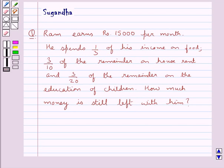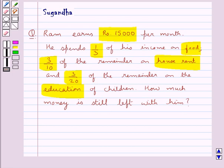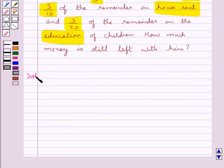Hello and welcome to the session. In this session we discuss the following question: Ram earns Rs 15,000 per month. He spends 1 upon 3 of his income on food, 3 upon 10 of the remainder on house rent, and 3 upon 20 of the remainder on the education of the children. How much money is still left with him? Let's move on to the solution.